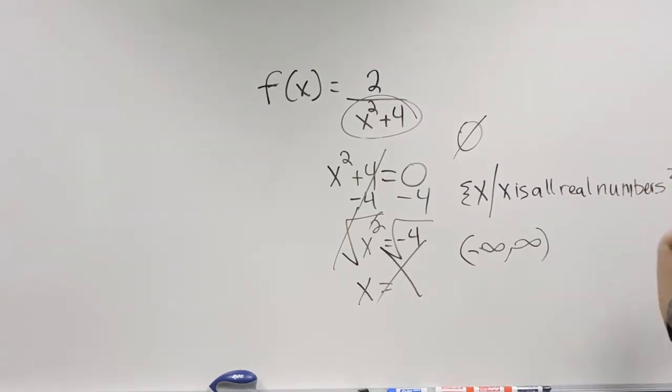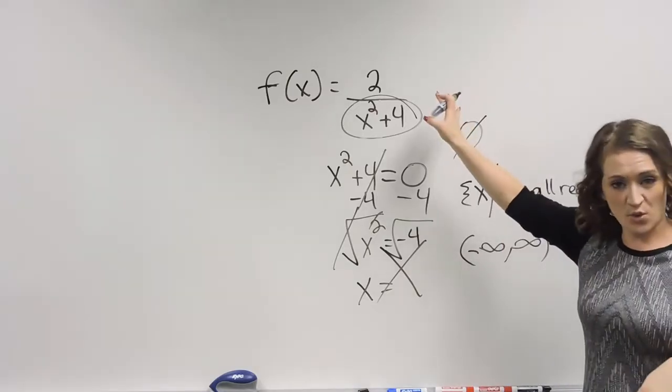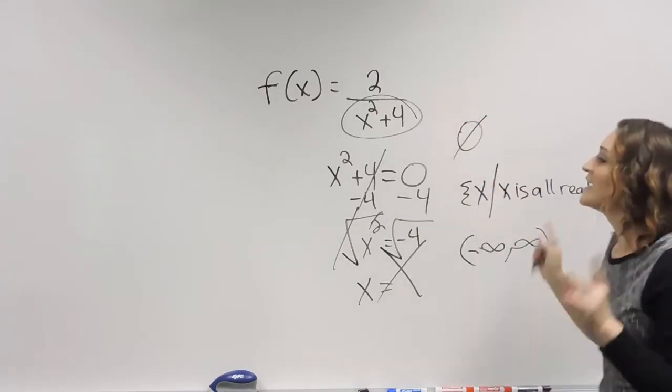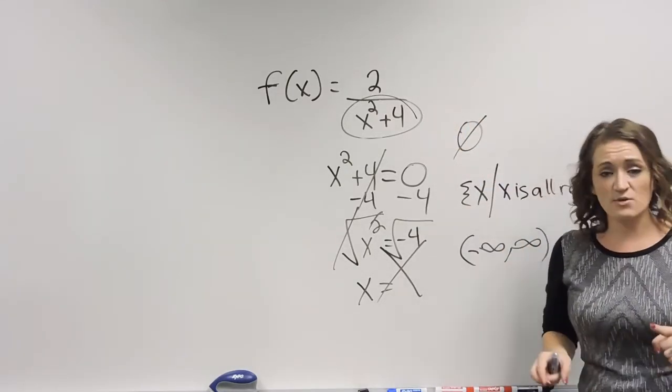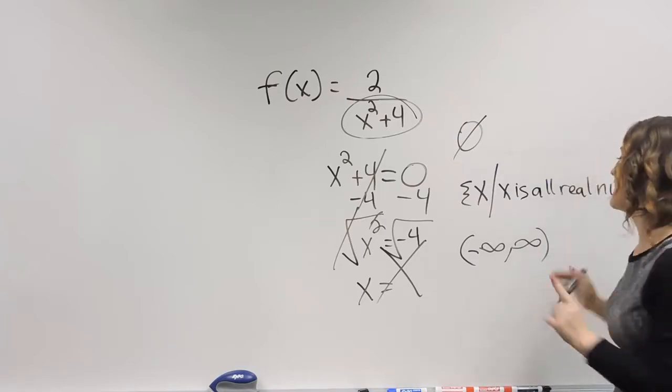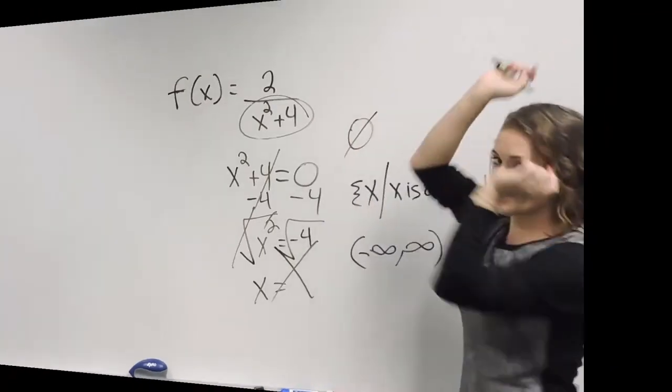So when finding a rational expression or finding the values that make a rational expression undefined, take your denominator and set it equal to zero, and then your domain is everything except that.